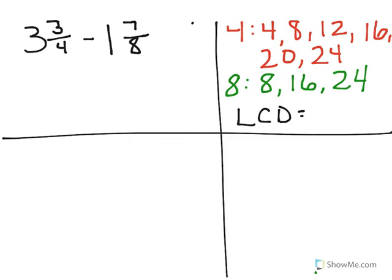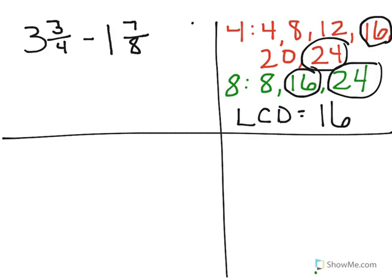And I can see that they both have 24 and also 16. Now I really could use either the 24 or the 16, but remember you want to keep your numbers as small as possible. So the least common denominator in this problem would be 16. That way if I use the 24, I would have to do more reducing.